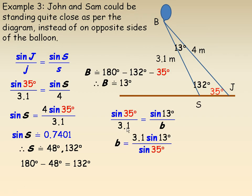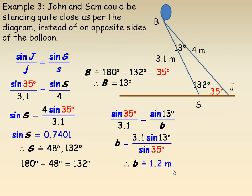We cross-multiply: 3.1 times the sine of 13 degrees divided by the sine of 35 degrees is what B will equal. Evaluating this expression, we get B to be about 1.2 meters. So if they're standing on the same side of the balloon, then Sam is only 1.2 meters from John. Now, this case where the triangle can be drawn two different ways is called the side-side-angle ambiguity, and I'm going to talk about that on the last page of the note.